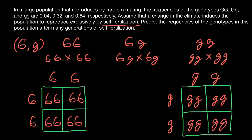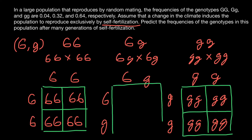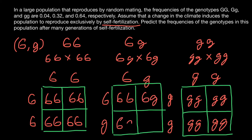We can say parent one and parent one here, because this is self-fertilization. As for the heterozygous genotype, we are going to see a different picture. With heterozygous on top and heterozygous on the side, when we build a simple Punnett square, we are going to see homozygous dominant, heterozygous, heterozygous, and homozygous recessive — a 1:2:1 ratio.